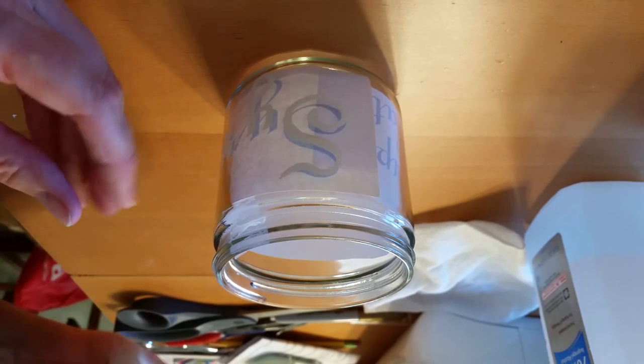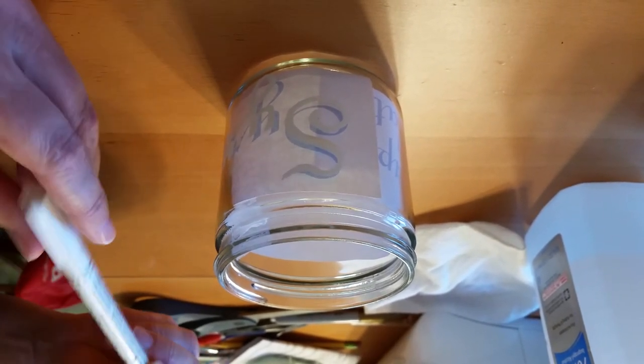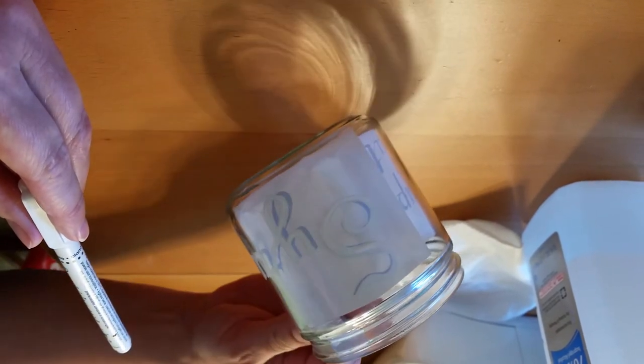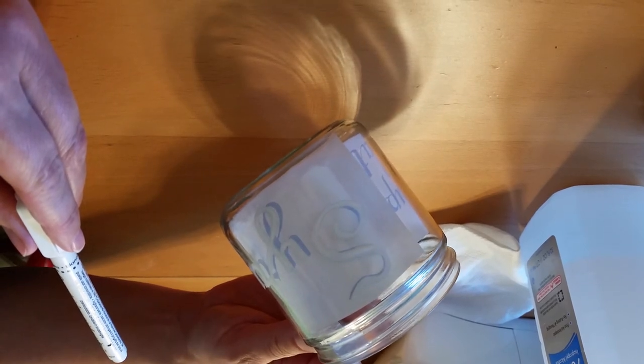And I've had success using this Deco Art glass paint marker in the dishwasher. I wouldn't put on pots and pans, but it's been working pretty well in the dishwasher.